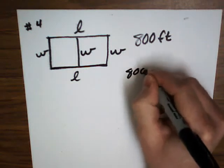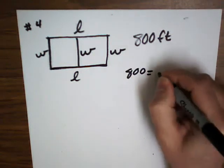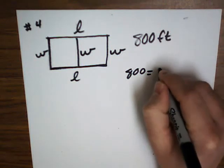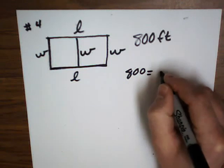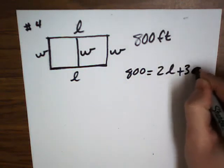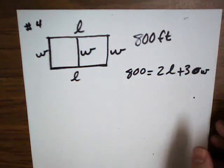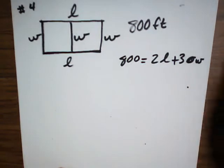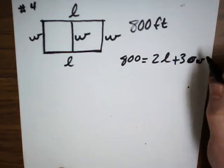So 800 has to be equal to how many L's? Three L's or three W's? Three W's and two L's? Okay. And I just like writing L. You can use X and Y, too. It doesn't matter. I just like writing L's. And I like my little W's with little wings on the sides.